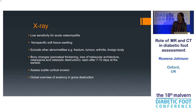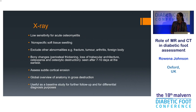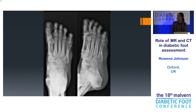Radiographs give you a really good overview of anatomy and gross destruction. When someone has advanced Charcot, for example, we really want a radiograph next to the MRI examination to give us that overview and understanding of where we've lost the anatomy. It's an excellent baseline imaging modality to have.